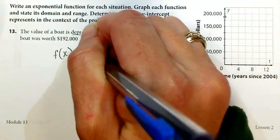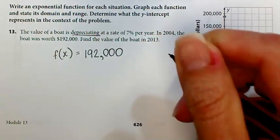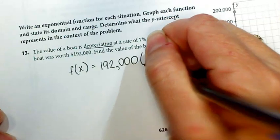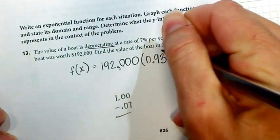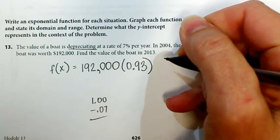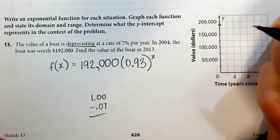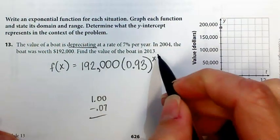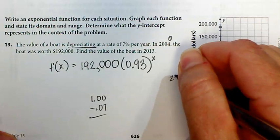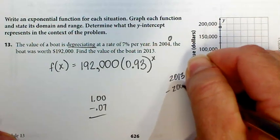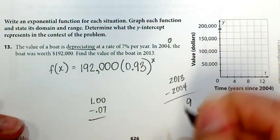The value of the boat at the beginning, or after zero years have gone by, is $192,000, but it's depreciating at a rate of 7% per year. Remember, we're going to take 1.00 and minus that 7%, and we're going to get 0.93 for our b value, or our common ratio, whatever you want to call it, because it's all the same. And then we're going to raise it to the x power. Well, we need to figure out, find the value of the boat in 2013. Well, if 2004 is year zero, then we're going to say 2013 minus 2004, that's 9 years after we start. Okay, so we're going to raise this to the ninth power.